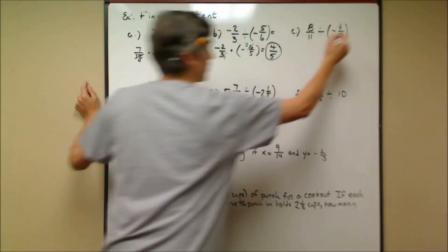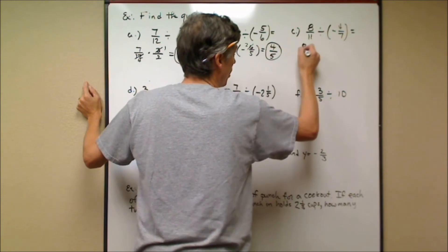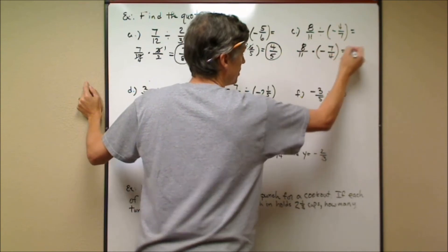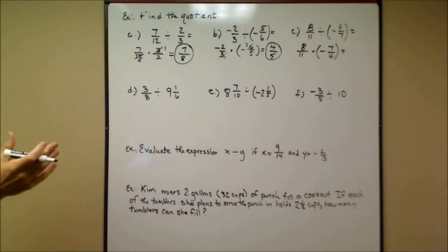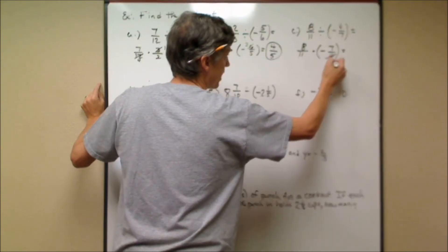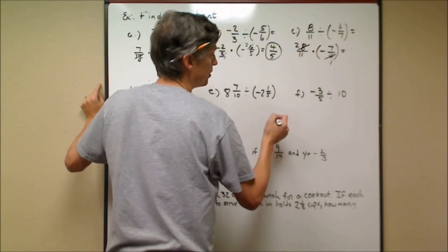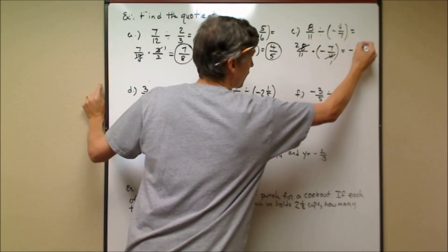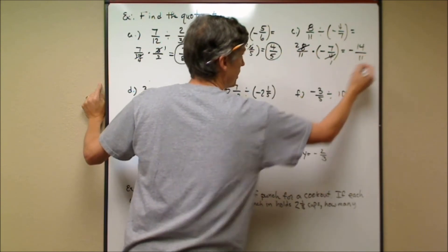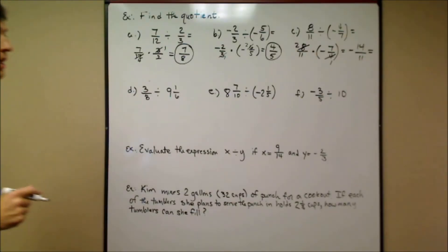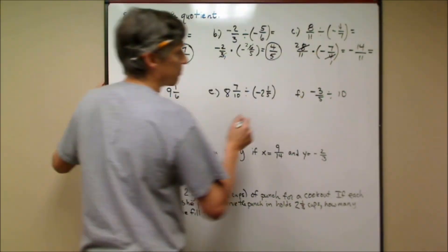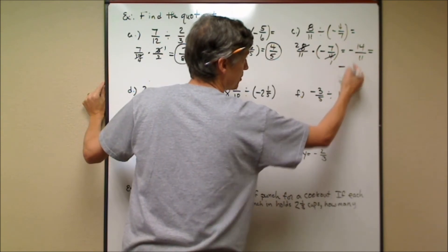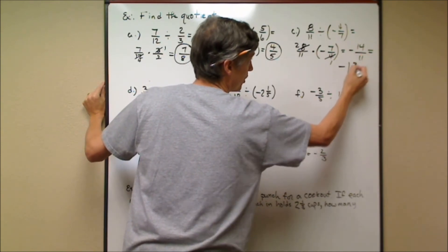The next example has one positive and one negative, so the answer will be negative. Invert the divisor and set up the multiplication. A factor of 4 cross-cancels, leaving a 2. Positive times negative is negative; 2 times 4 is 8 and 11 times 1 is 11, giving −8/11... wait, that gives 14 on top and 11 on bottom — an improper fraction, negative 14/11. Converting to a mixed number: 11 goes into 14 once with 3 left over, so the answer is negative 1 and 3/11.